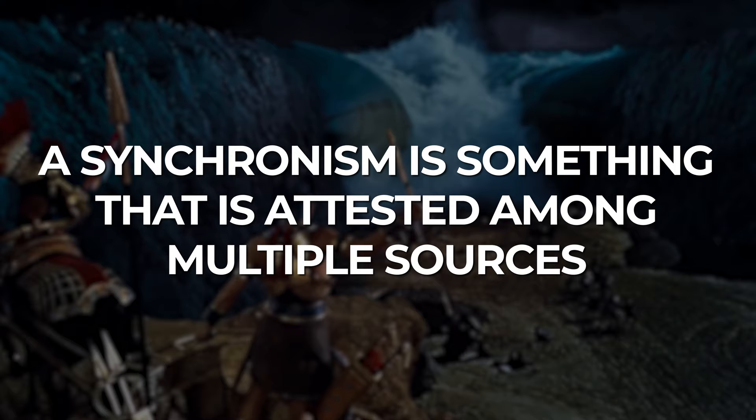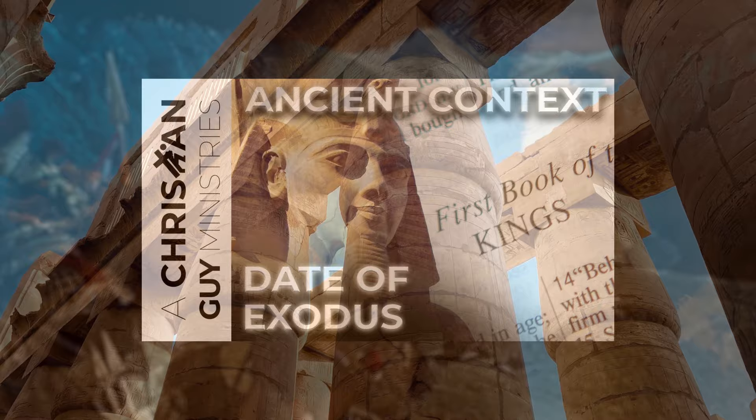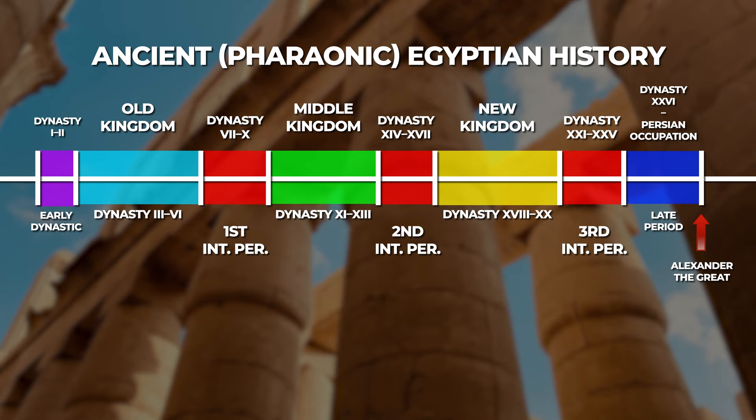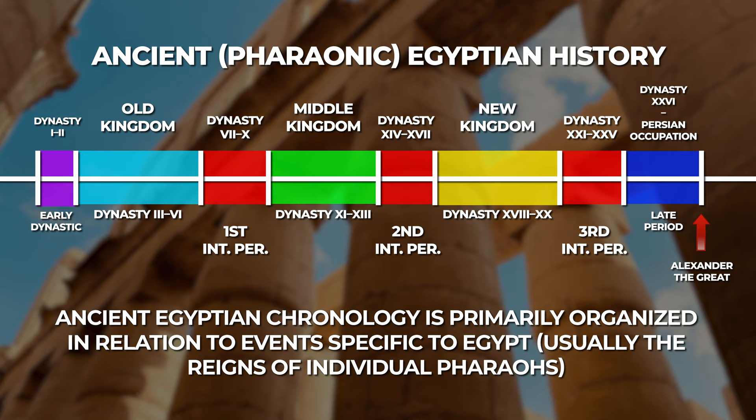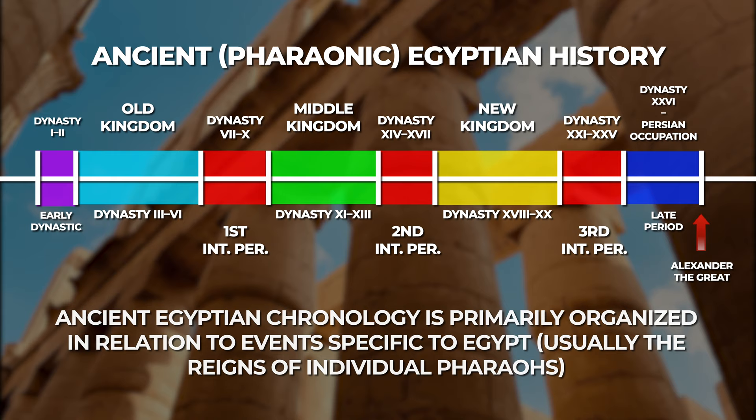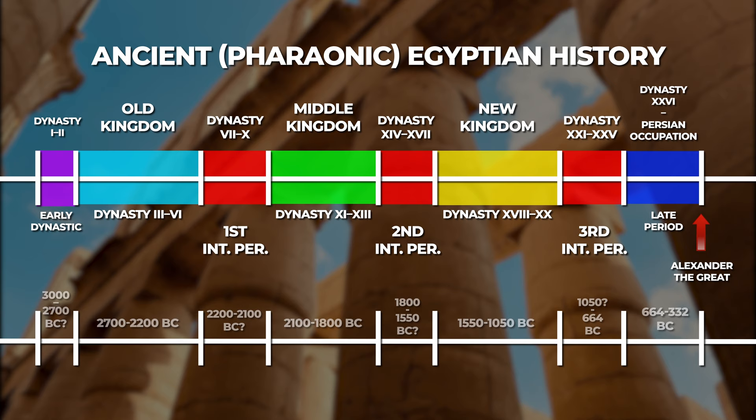In the second video of this series, I gave an overview of ancient Egyptian chronology. Recall that ancient Egyptian chronology is, for the most part, a relative chronology – that is, it is organized in relation to events specific to Egypt, usually the reigns of individual pharaohs. The challenge for scholars is to fix this relative chronology to an absolute dating scheme. The foundation for doing this is to look for synchronisms in the historical and archaeological records.